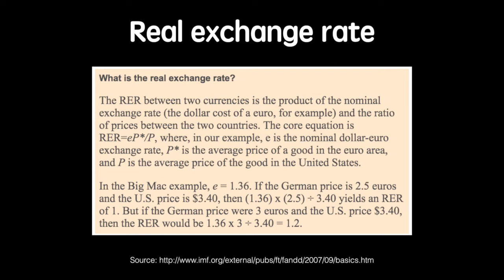To explain the real exchange rate, I'll quote from the IMF website. One can measure the real exchange rate between two countries in terms of a single representative good — say the Big Mac, the McDonald's sandwich of which a virtually identical version is sold in many countries. If the real exchange rate is one, the burger would cost the same in the United States as in Germany when expressed in a common currency. That would be the case if the Big Mac costs $1.36 in the US and 1 euro in Germany. In this one-product world, the purchasing power parity of the dollar and the euro is the same and the real exchange rate is 1. Economists say that absolute purchasing power parity holds.